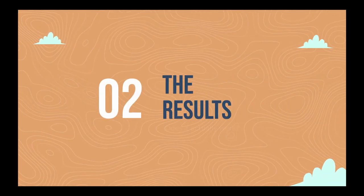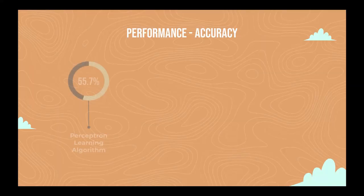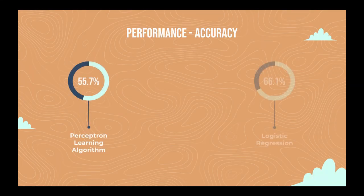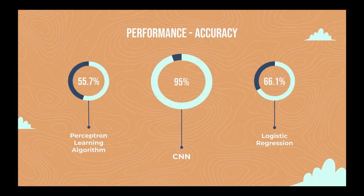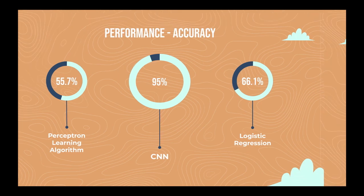We compared the results of our CNN with other traditional machine learning models, such as the perceptron learning algorithm and logistic regression. The base accuracy of our CNN far surpasses that of the other two. CNN, although requiring high computing power, can deliver an accuracy that is way better than those yielded by older methods.